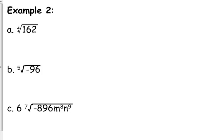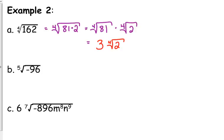So 162, we want to figure out what perfect fourth divides evenly into 162. I think 81 is going to work for us. 162 can be expressed as 81 times 2. So the fourth root of 81 times the fourth root of 2, the fourth root of 81 is 3, and we cannot take the fourth root of 2, so it's got to stay under it. Just make sure that you're looking at the right list.